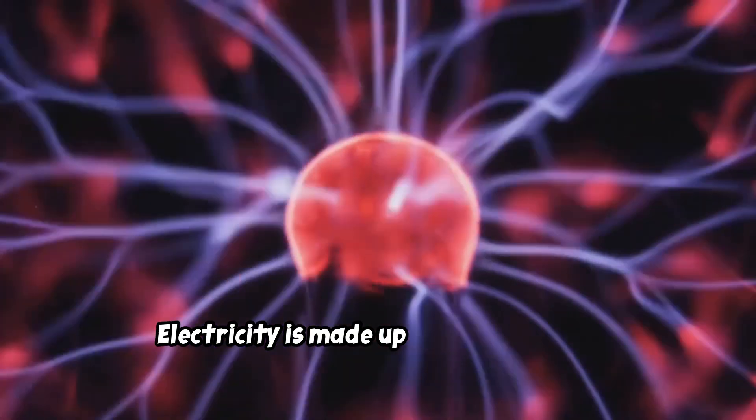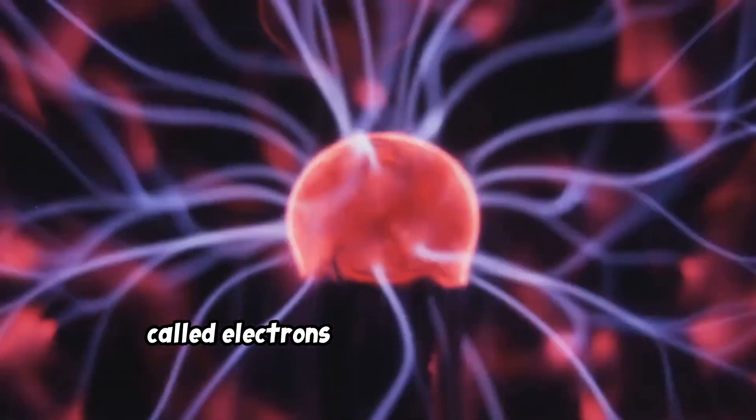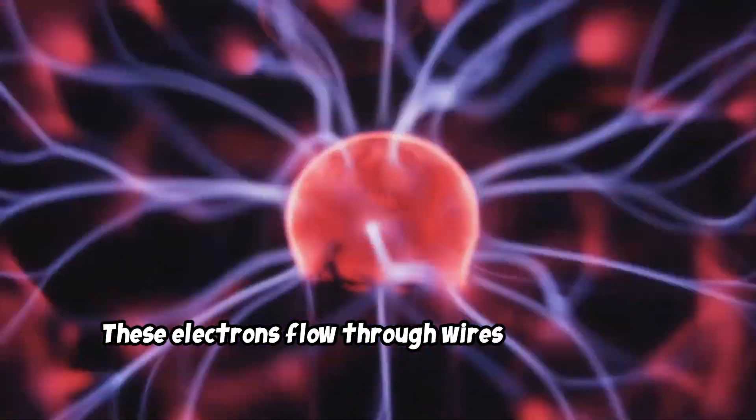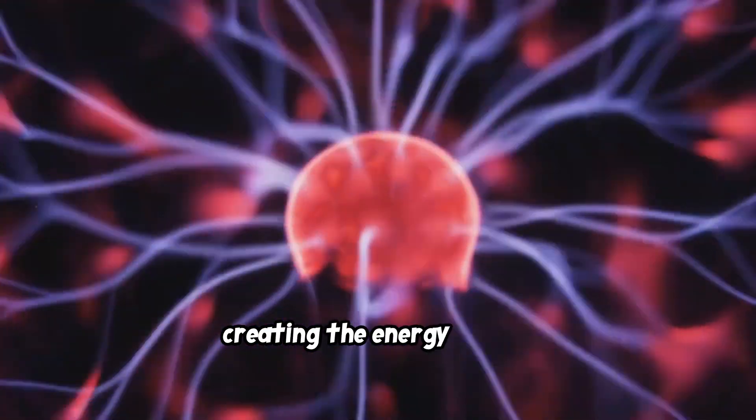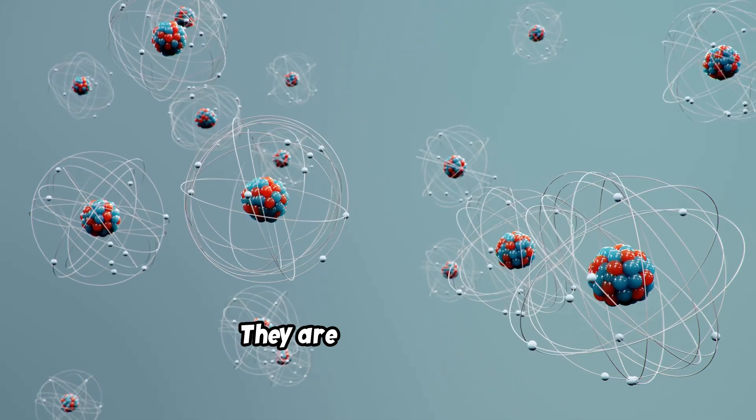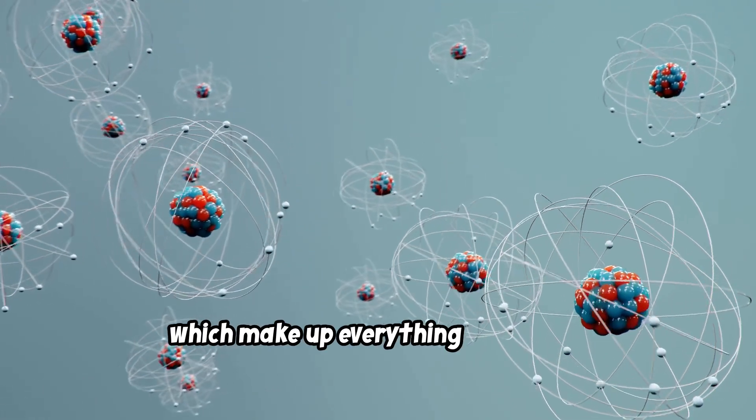Electricity is made up of tiny particles called electrons that are always moving. These electrons flow through wires and circuits, creating the energy we use. These electrons are so small that we can't even see them. They are part of atoms which make up everything around us.